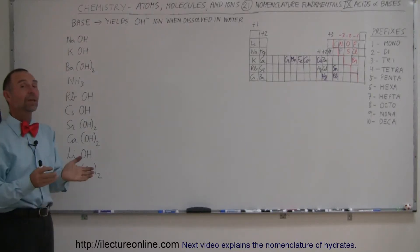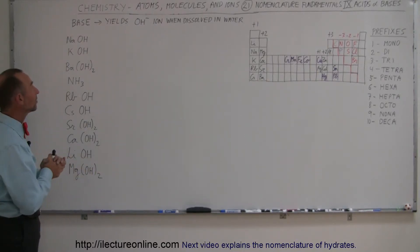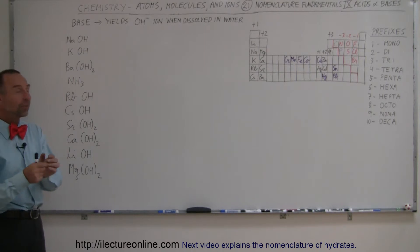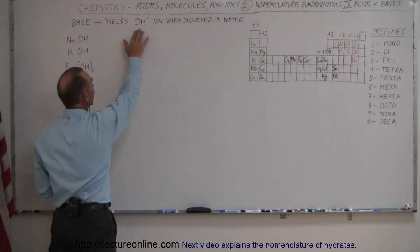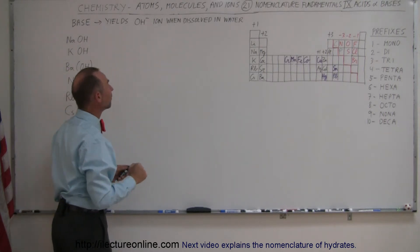Here we're going to talk about nomenclature fundamentals. In this case, we're talking about bases. A base is a substance in chemistry that when placed in water or in aqueous solution, it yields OH minus ions.